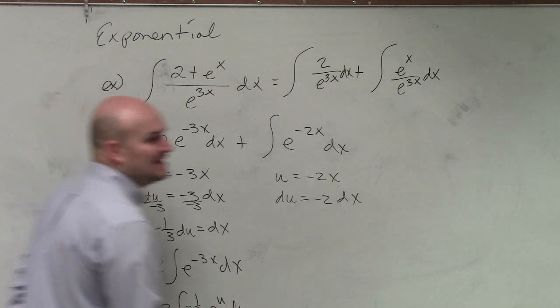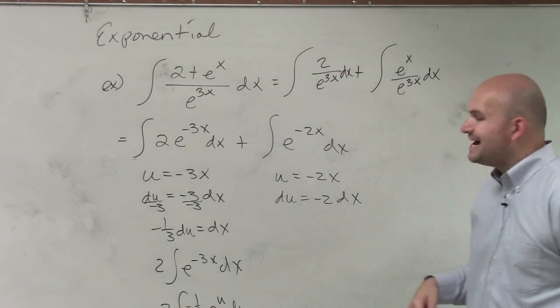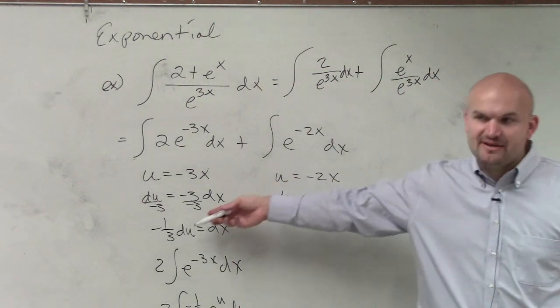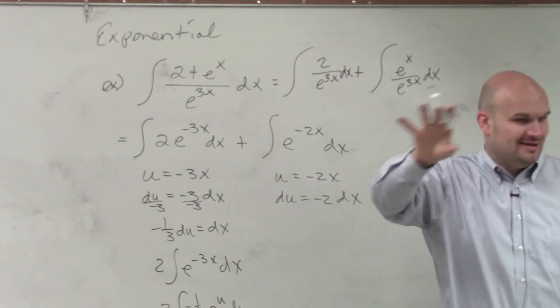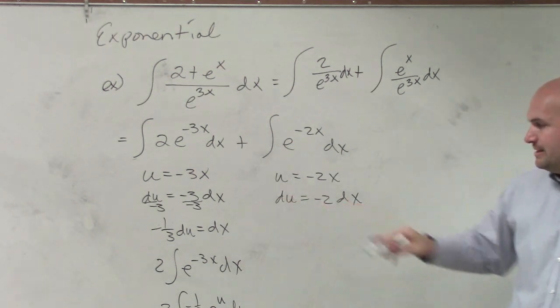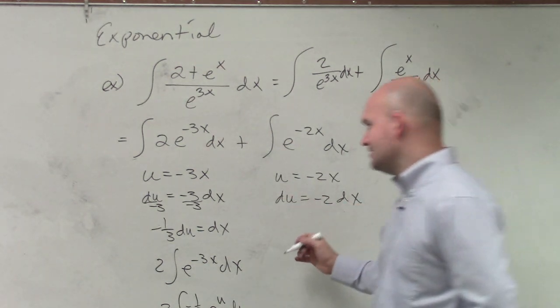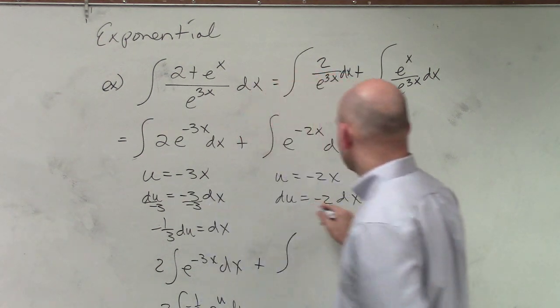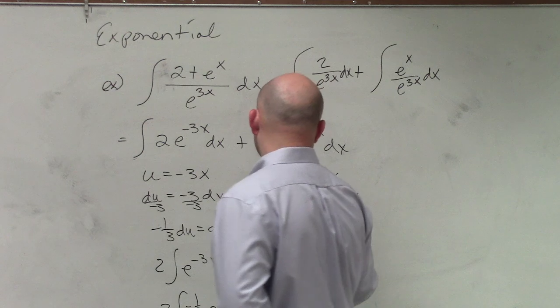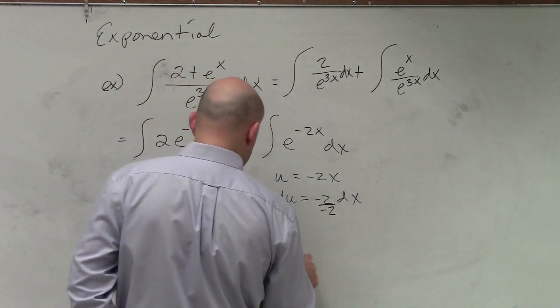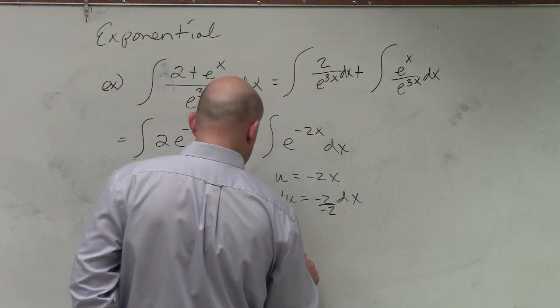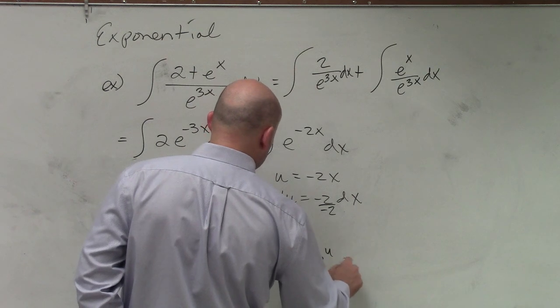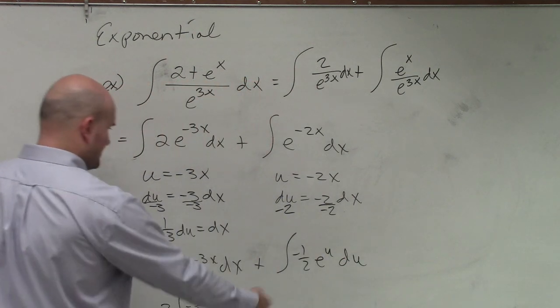Which, again, I can take out that negative one-third one more time. And it would be the same thing if I would have done it the other way. So I'm just showing you another way to look at it. If you're getting confused, you can do the other way that we previously did, which is perfectly fine. Plus, this one you're going to divide by negative 2 here. And therefore, you're going to have a negative one-half e to the u du. So we're going to take this out.